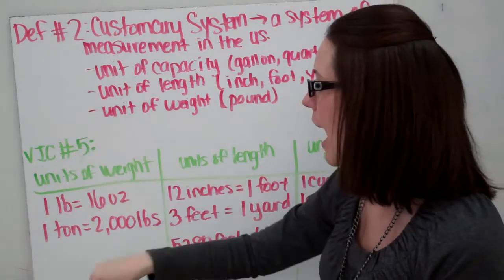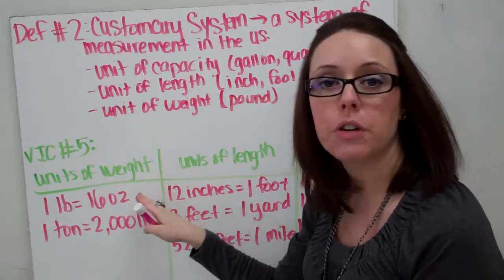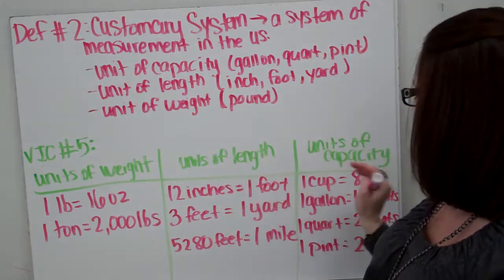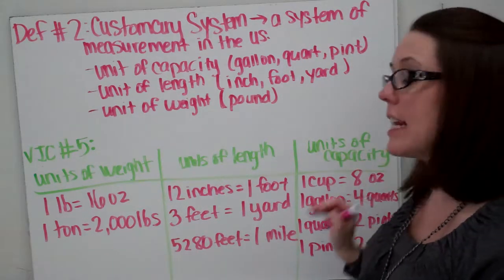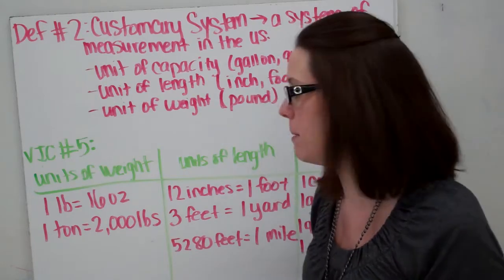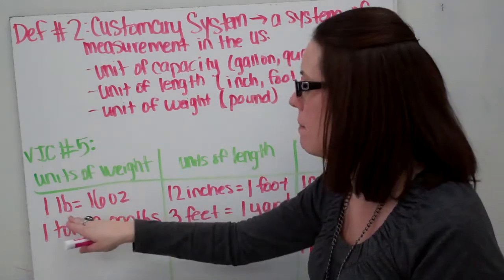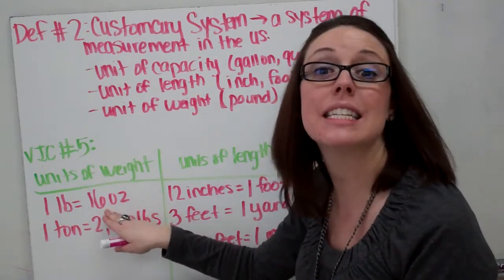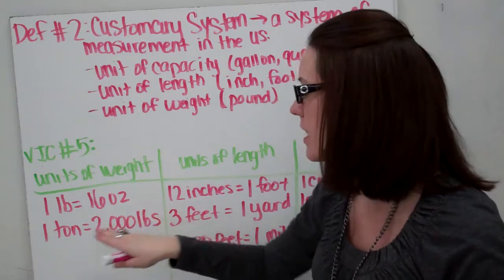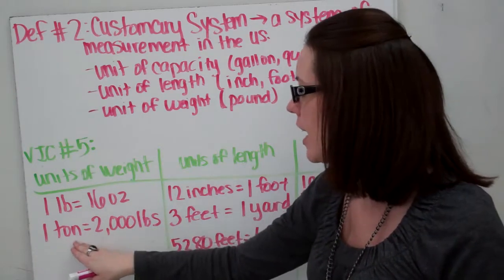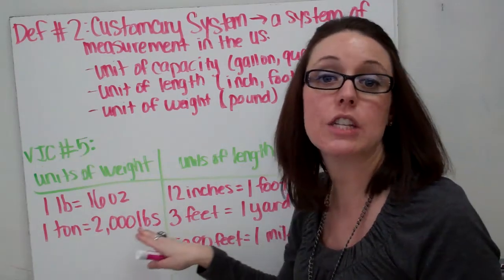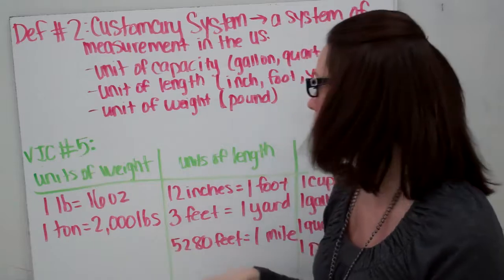There are several units of weight, units of length, and units of capacity that you're just going to have to memorize. These are things you must commit to memory. One pound is 16 ounces. One ton is 2,000 pounds.